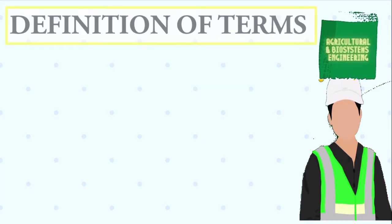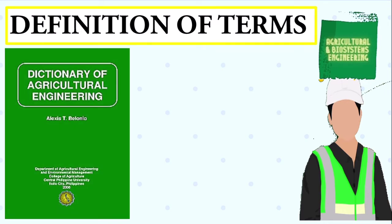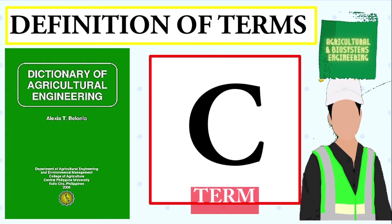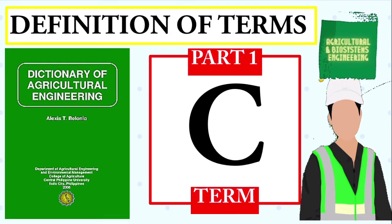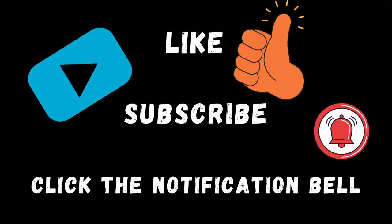Welcome to my channel. This time, we will be having a definition of terms related to agricultural engineering. The list of terms came from Dr. Alexis Belonio's Dictionary of Agricultural Engineering. The terms I will be showing to you are part one of the words that start from letter C. I will be reading the terms twice before I will reveal the terms being defined. Don't forget to like, subscribe and click the notification bell.